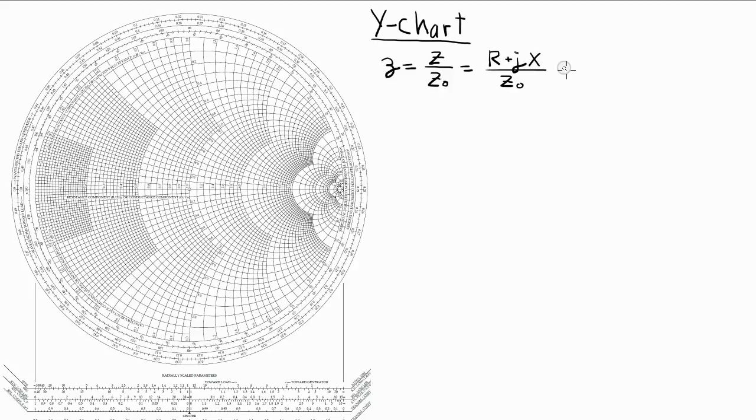Now this impedance was normalized before being plotted, resulting in the normalized impedance little r plus j little x, where the real part is called the resistance and the imaginary part is called the reactance.